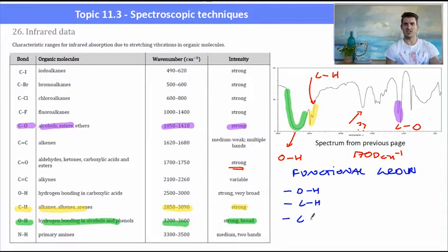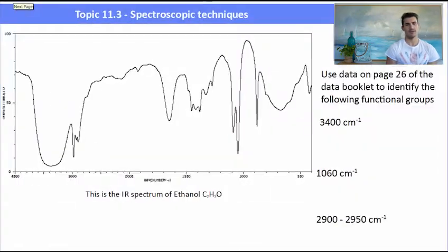So for this one, I've got an OH, a CH, and a CO. So this is most likely to be an alcohol. And in fact, the one on the previous page was ethanol. So that is the IR spectrum of ethanol. And a question might ask you to use the data book to identify the following functional groups. The functional group at 3400, the functional group at 1060, and then the functional group between 2900 and 2950.